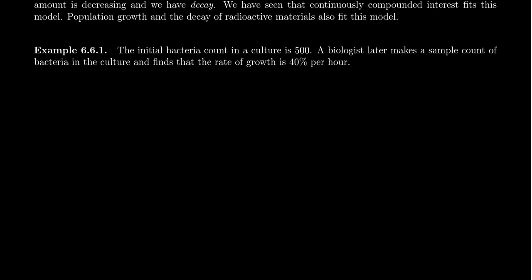For this current video, let's consider a very basic exponential population growth problem. We have an initial population count of 500 in a culture. Culture just means a collection of bacteria. A biologist later makes a sample count of the bacteria in the culture and finds that the growth rate is 40% per hour. So our first question is, can we come up with a formula to model the growth of this bacteria? The initial bacteria was 500, so our initial amount, the initial population, is 500.